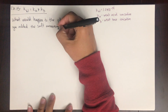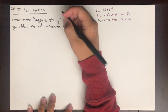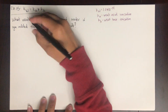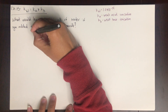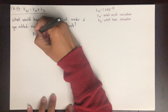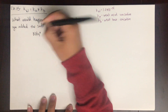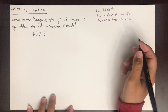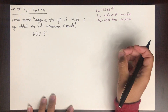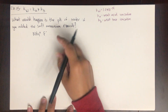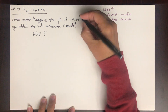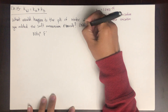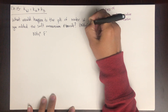So ammonium fluoride — ammonium is one of those polyatomic ions you're responsible for. NH4+ is ammonium, and fluoride is F minus. So ammonium fluoride is NH4F.